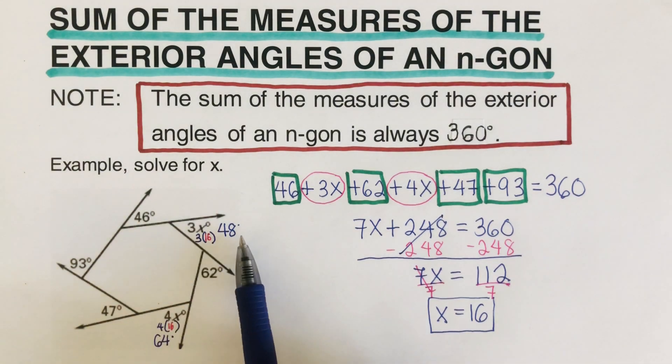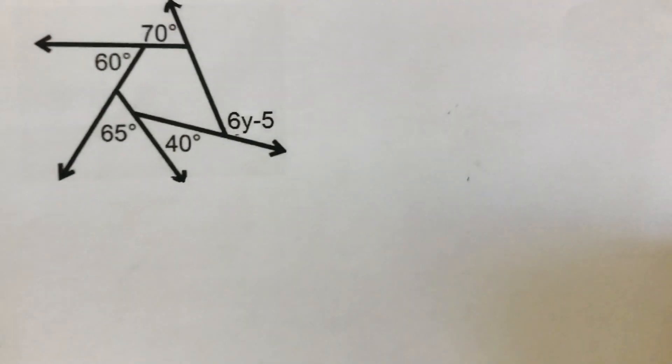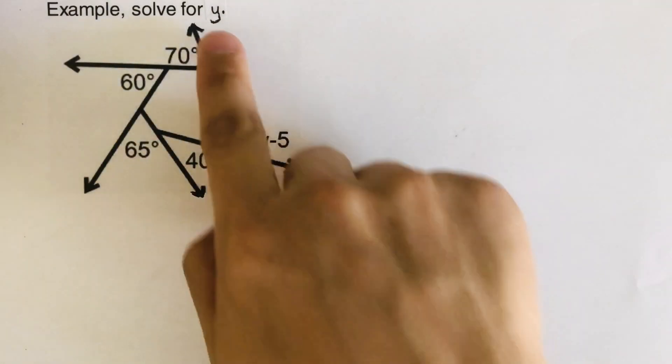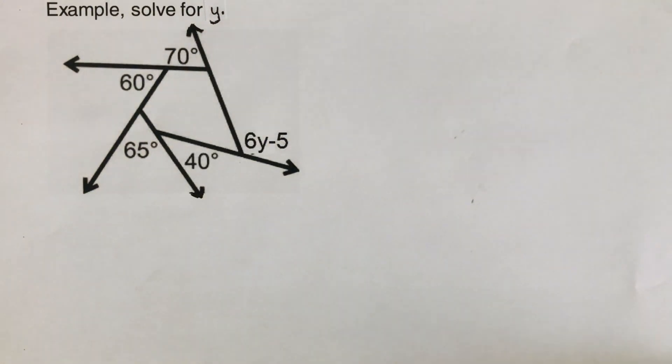So if you add 46, 48, 62, 64, 47, and 93, it will come out 360. At this time, I would encourage you to pause this video and try this problem out on your own. Solve for y, and when you're done, unpause it and check your answer.